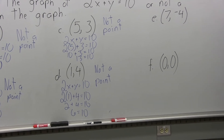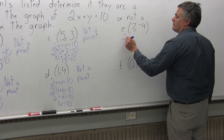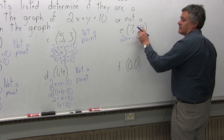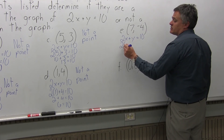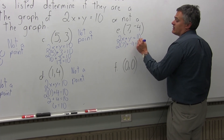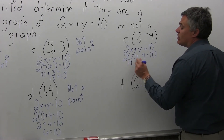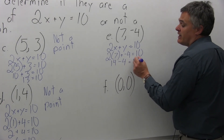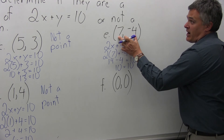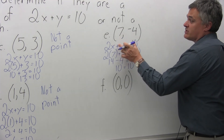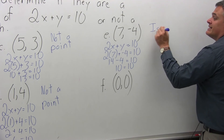Part E: is (7, negative 4) a point on the graph of the line 2x plus y equals 10? Writing 2x plus y equals 10 and putting in the x-coordinate of 7: 2 times 7 plus a negative 4. Two times 7 is 14, plus negative 4 simplifies to minus 4, giving 10 equals 10 — a true statement! So (7, negative 4) is a point on the graph of 2x plus y equals 10. The answer to Part E is: it is a point on the graph.